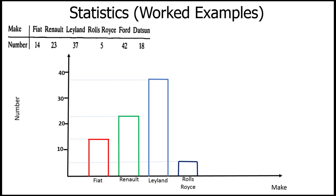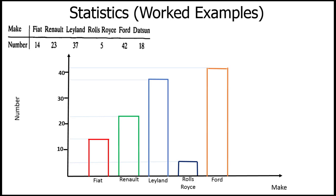Next is Ford, which is the highest number we have - 42 cars. Slightly above 40 on the vertical axis is where we have 42. Rule a horizontal construction line parallel to the make axis - a faint line. Where you want to draw the bar, take your ruler straight and parallel to the number axis, rule the line, go to the second side for the width, and rule it up. Label it Ford.